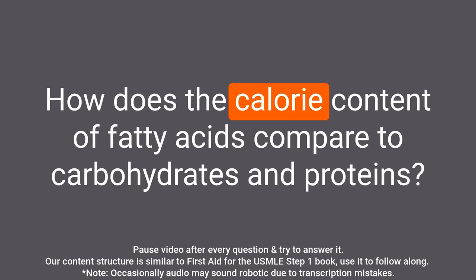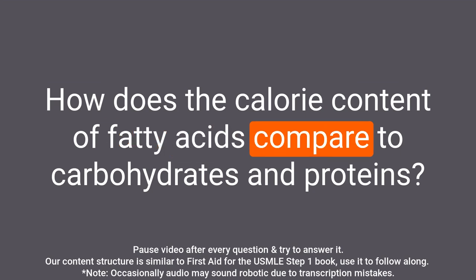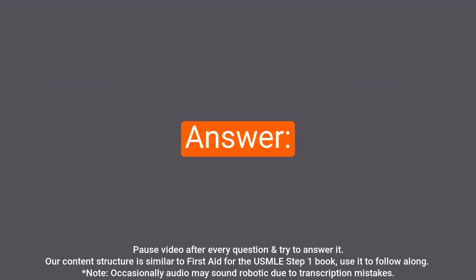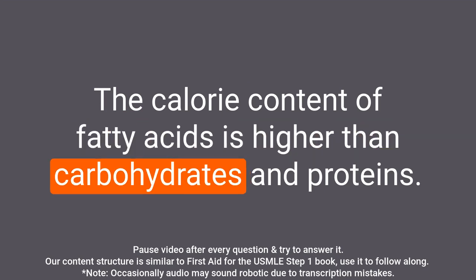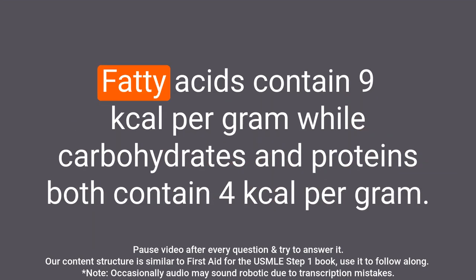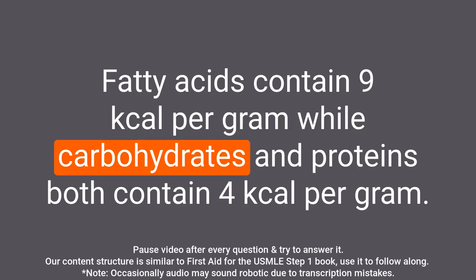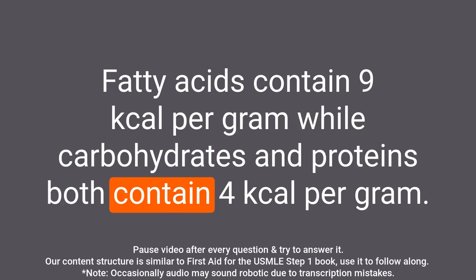Question: How does the calorie content of fatty acids compare to carbohydrates and proteins? Answer: The calorie content of fatty acids is higher than carbohydrates and proteins. Fatty acids contain 9 kcal per gram while carbohydrates and proteins both contain 4 kcal per gram.